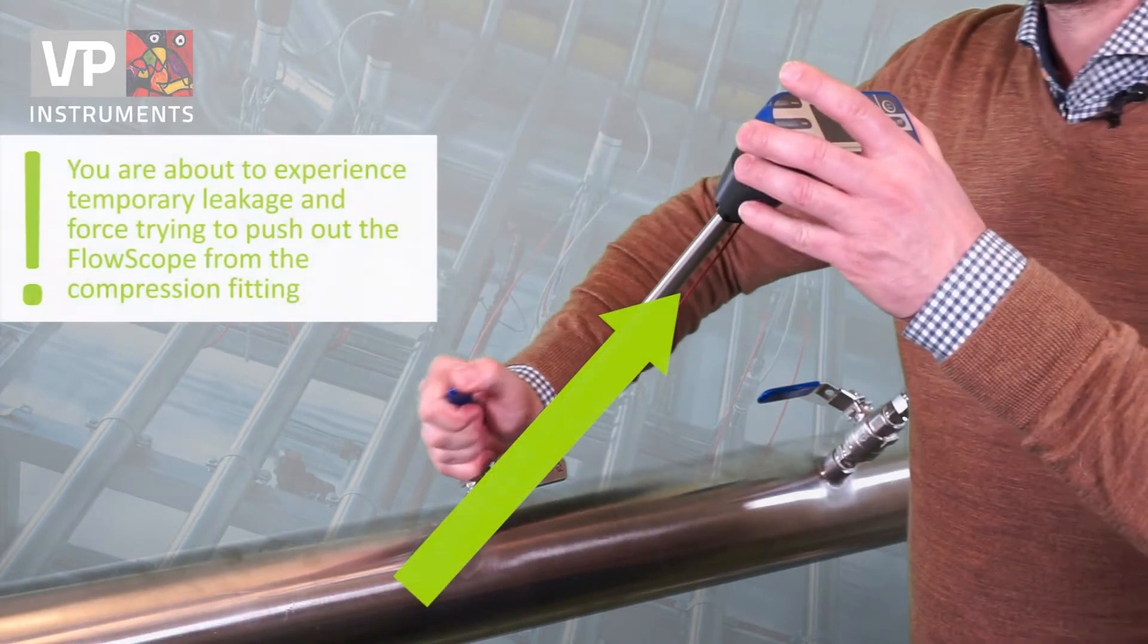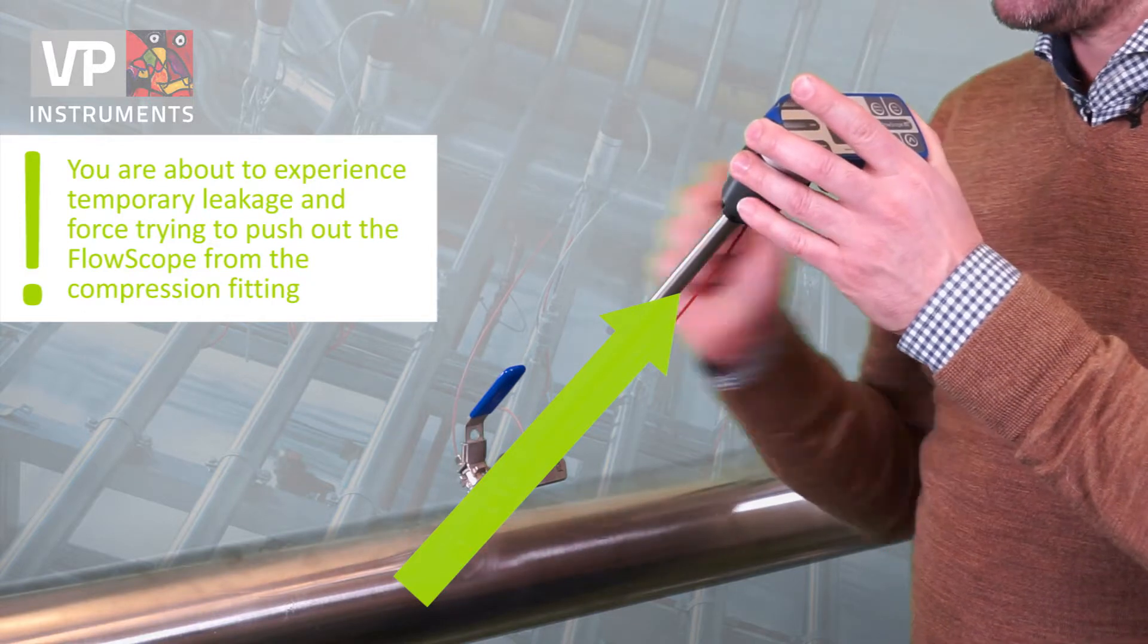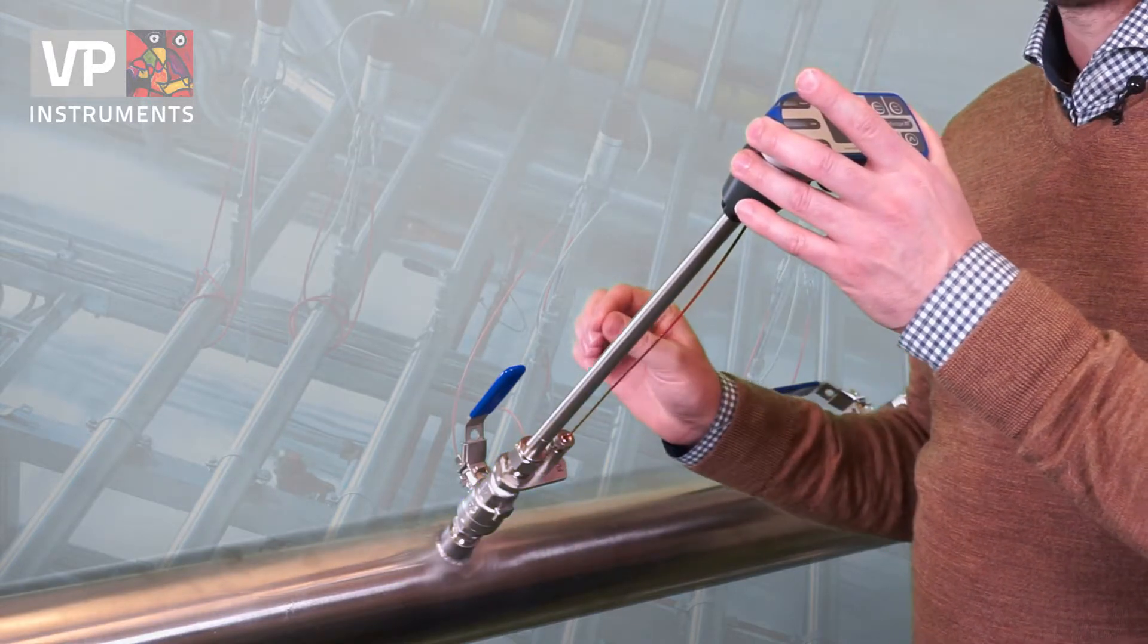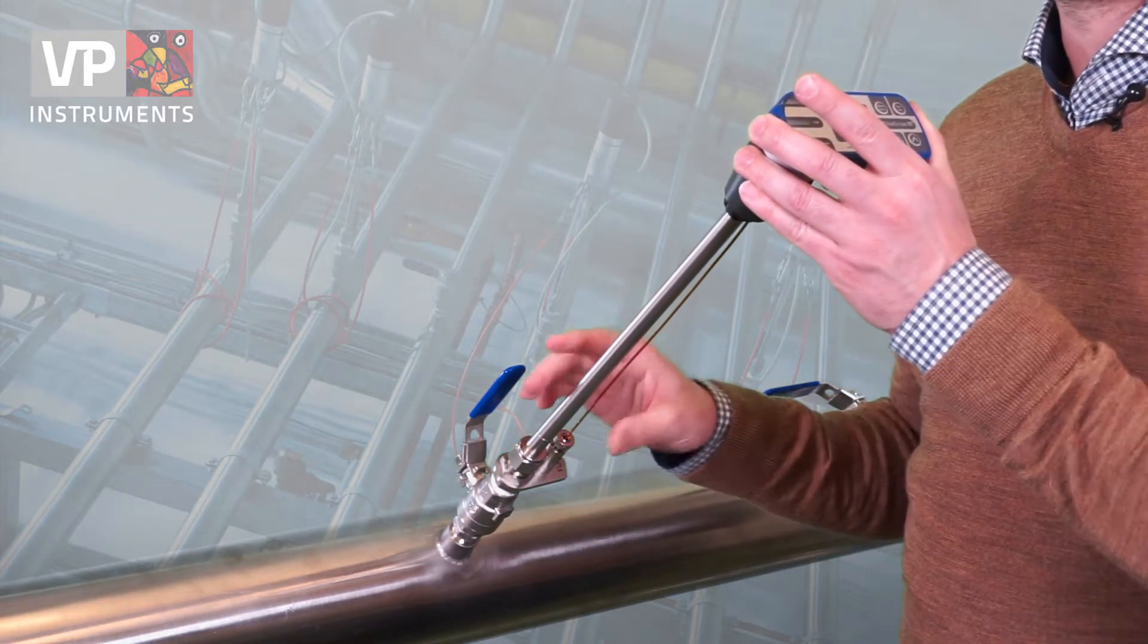I'm opening the ball valve and at that time pressure inside the pipe would like to force the flow meter upwards. Because of the safety cable and the locking brake, it stays in place. It will not shoot out of the compression fitting.